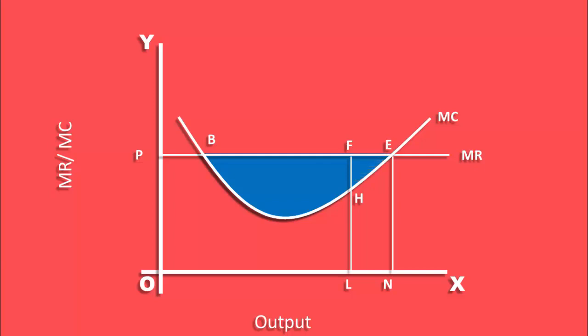If he produces more than the equilibrium output N, say K units, marginal cost becomes greater than marginal revenue.